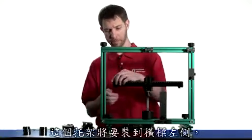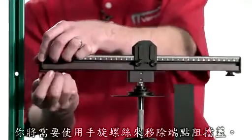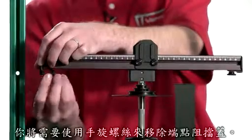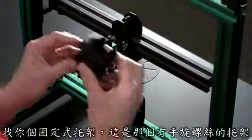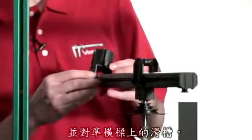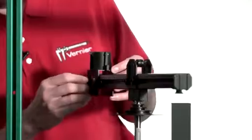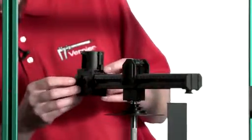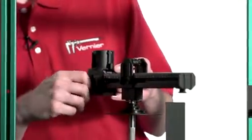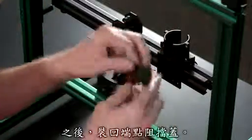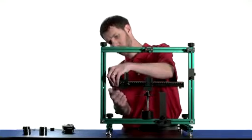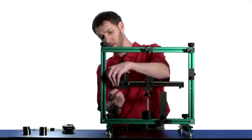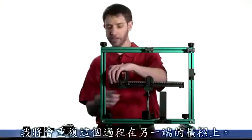This carriage will go on the left side of the beam. You'll need to use this thumb screw to remove the end cap. Find your fixed carriage. That's the one with the thumb screws. And align the tabs to the slot in the beam. Then replace the end cap.